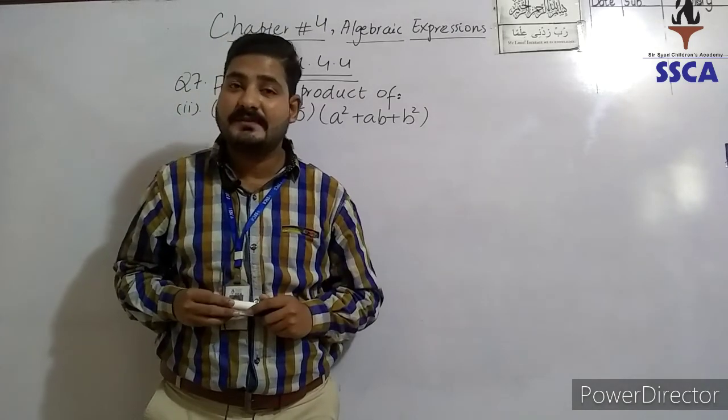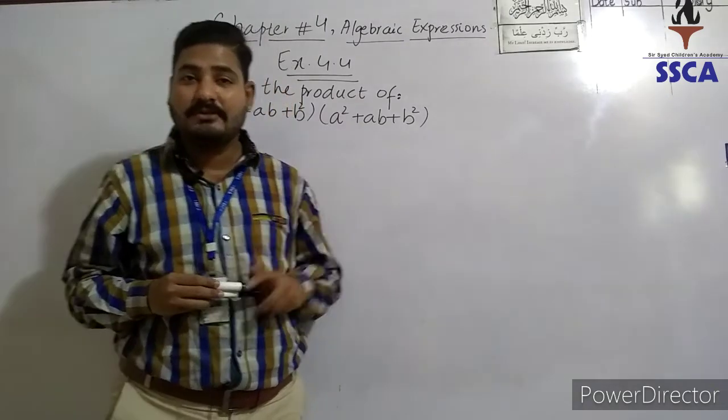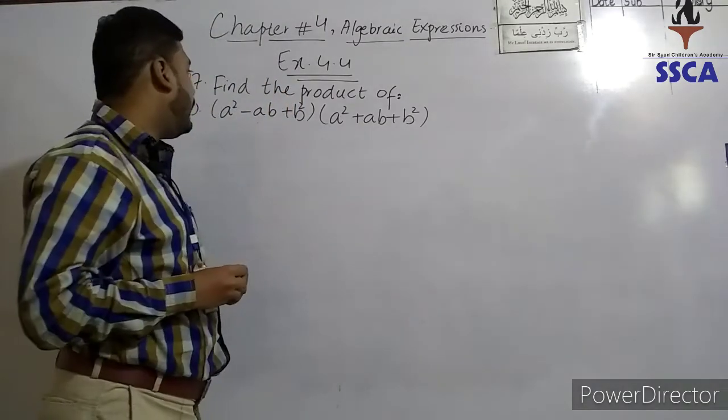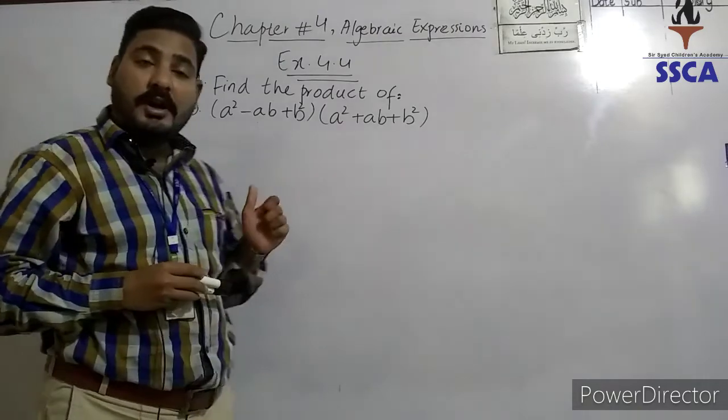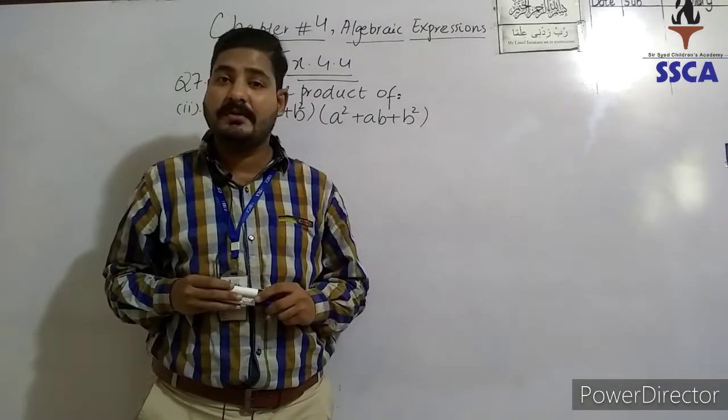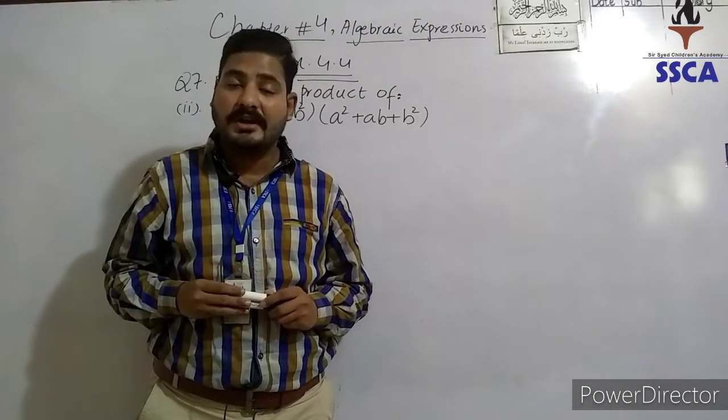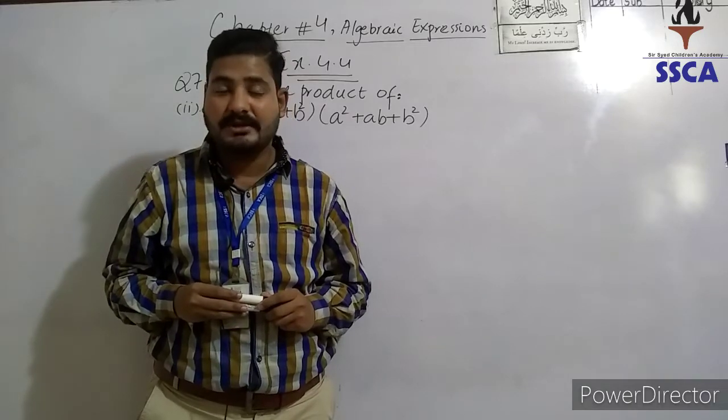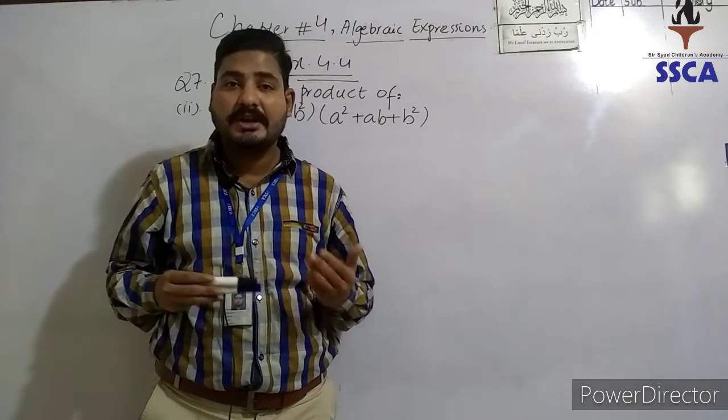In exercise 4.4, question number 7, what is asked? The question is: find the product of two algebraic expressions given in brackets. What will we do to find the product?